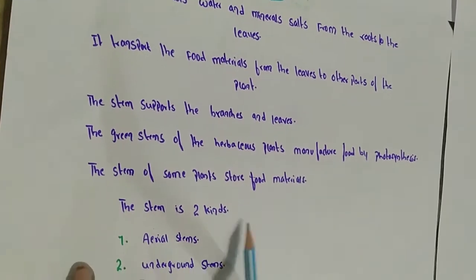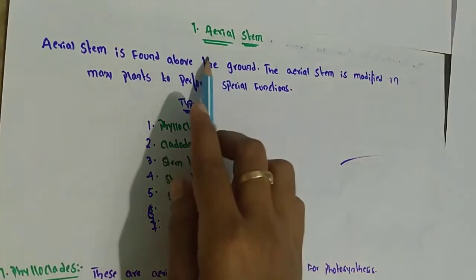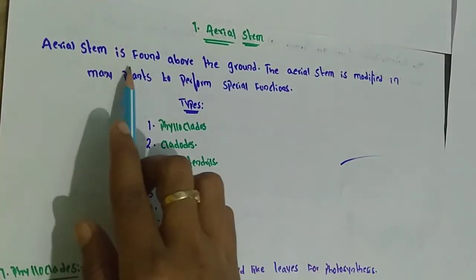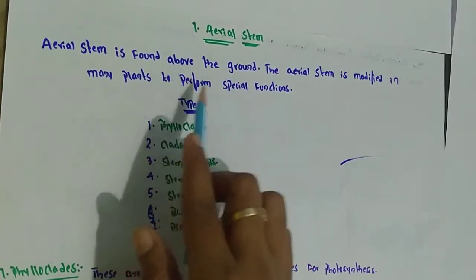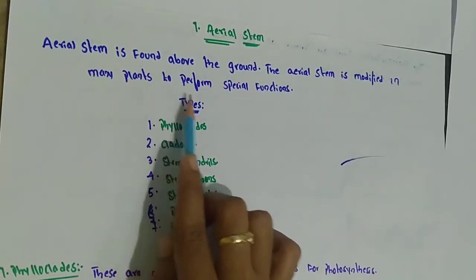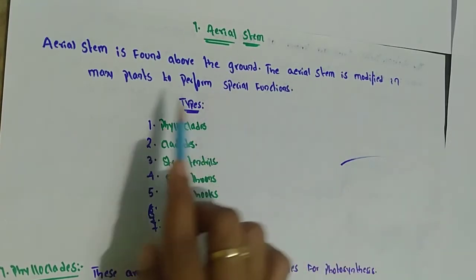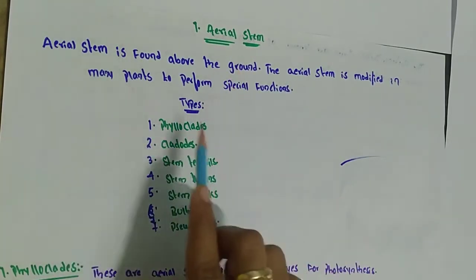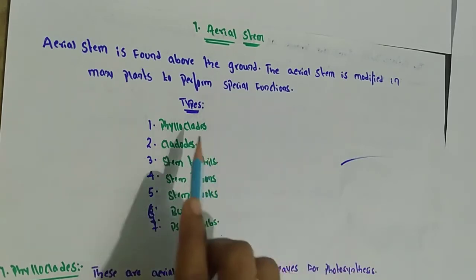The stem is of two kinds: aerial stems and underground stems. The first type, the aerial stem, is found above the ground. The aerial stem is modified in many plants to perform special functions, such as the storage of food materials.